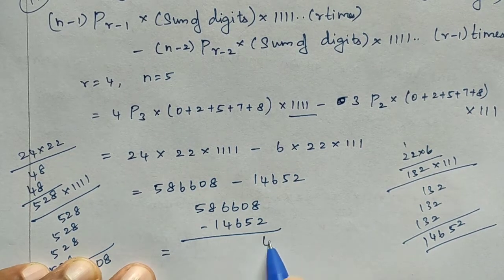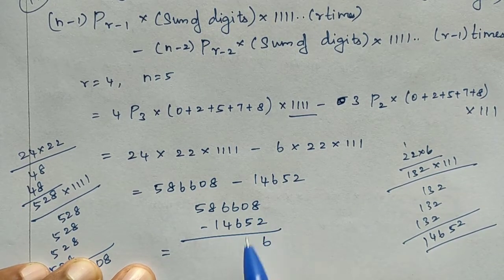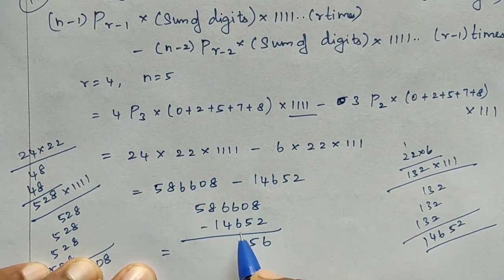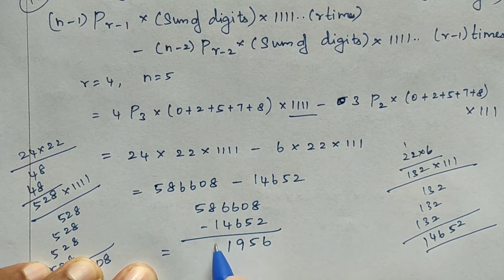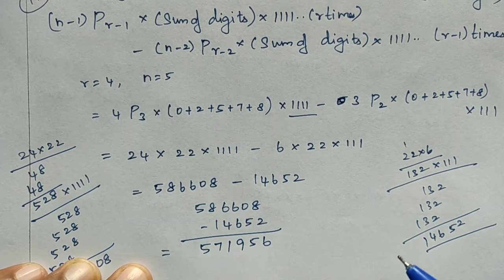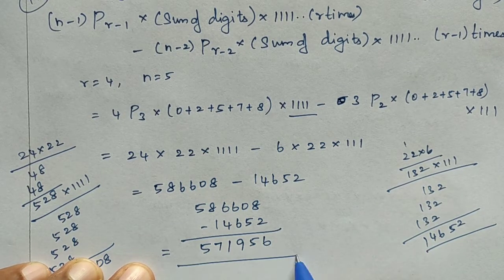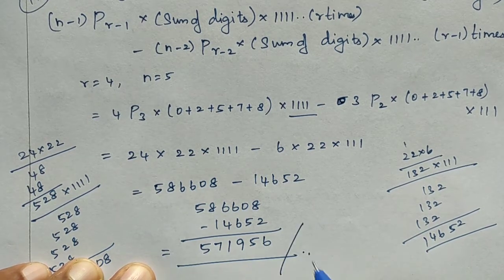Subtracting: 586608 minus 14652. Step by step: 8−2=6, 10−5=5 (borrow), 15−6=9, 5−4=1, 8−1=7, 5 remains. So the answer is 571956.